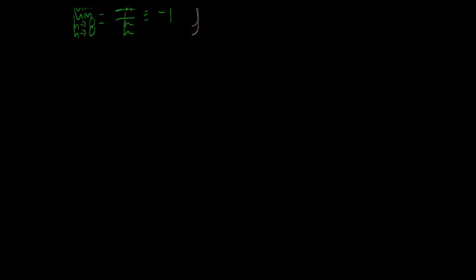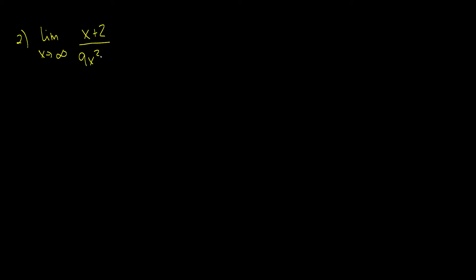Now we'll move on to something that's still pretty simple. This is just testing your knowledge of something we learned a few videos ago. The limit as x goes to infinity of (x + 2) over (9x² + 1). Right away you should be able to see that this is zero, because the leading term on the top, x to the one, is smaller than x to the two on the bottom. Therefore the top increases slower than the bottom, so it comes out to roughly zero.